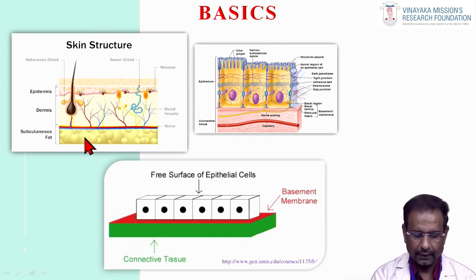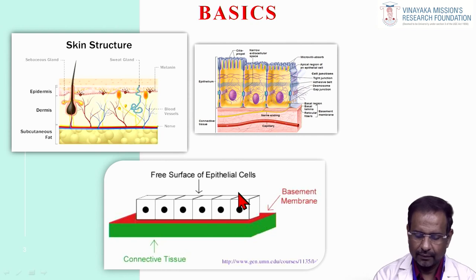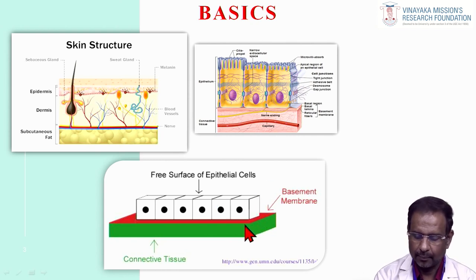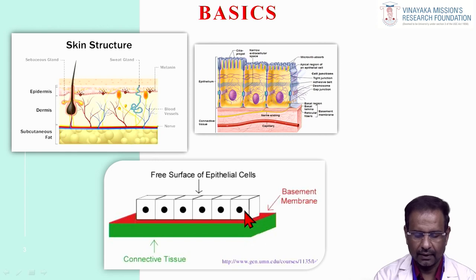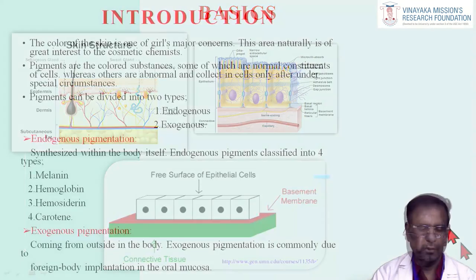The same in the oral epithelium: the first superficial layer is called epithelium, then basement membrane, then chronic tissue. These are the three layers in the skin and epithelium introduction.